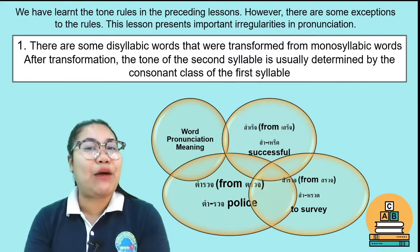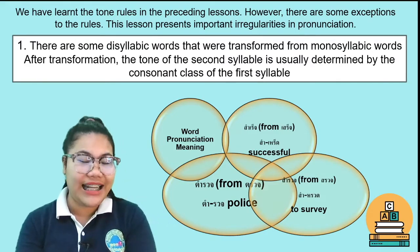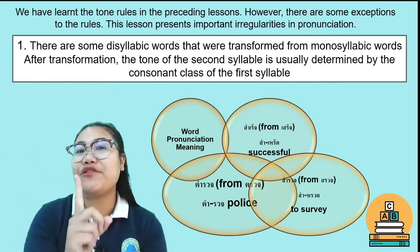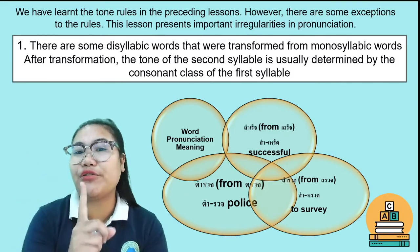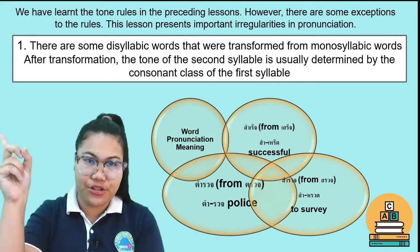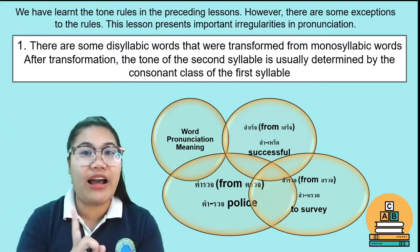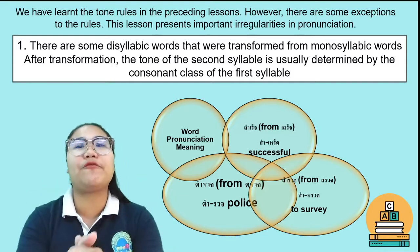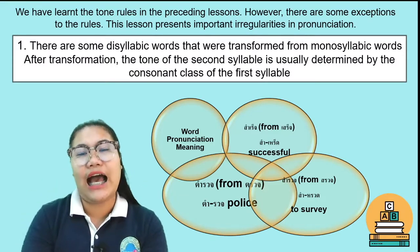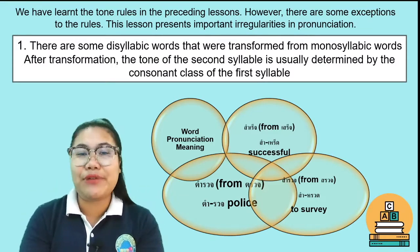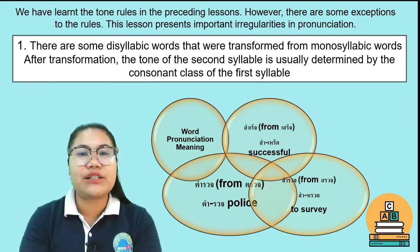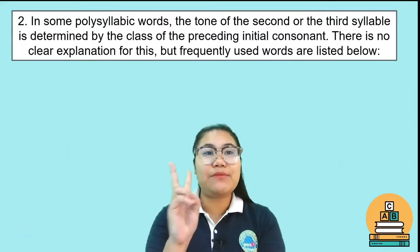Here is the word สำรวจ — make it low tone. But if you follow the rule, it should be high tone. It is not high tone because this word comes from the word สวน. We read it as สำรวจ, which means 'survey'. For number two, in some polysyllabic words, the tone of the second or third syllable is determined by the class of the preceding initial consonant.